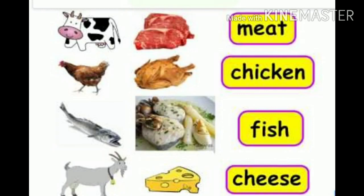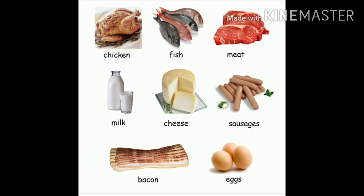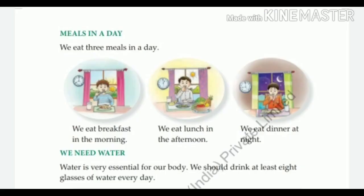All these foods from animals and plants are important. We eat three meals a day. We eat breakfast in the morning, lunch in the afternoon and dinner at night.